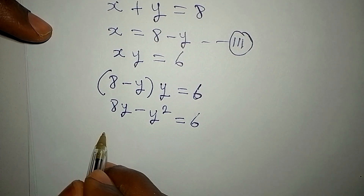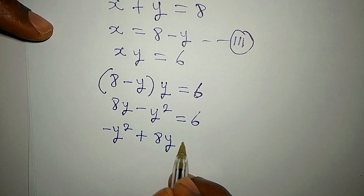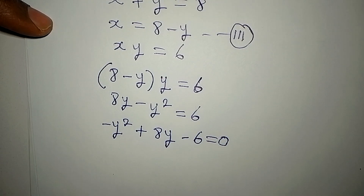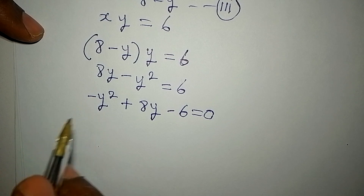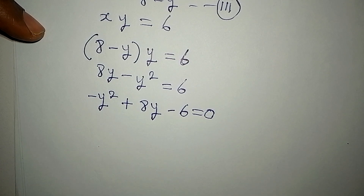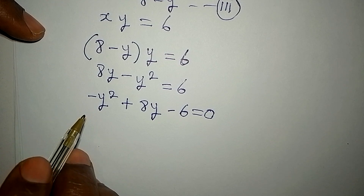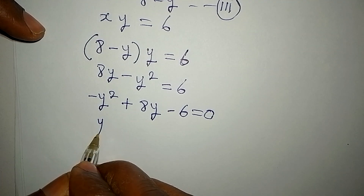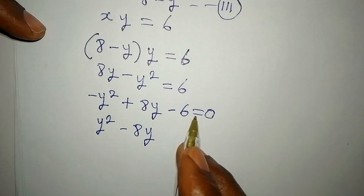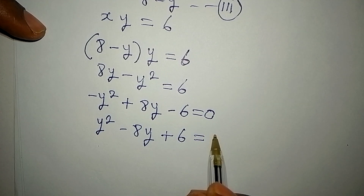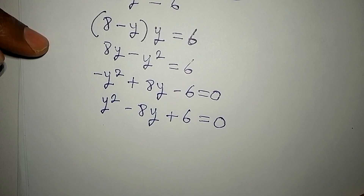I can rearrange this so I have minus y squared plus eight y, then minus six equals zero. Now I can remove the negative from the leading term — we don't expect the first variable to be negative — so we multiply everything by negative one. Negative one times minus y squared gives y squared; negative one times eight y gives negative eight y; negative one times negative six gives plus six; and the right side remains zero.